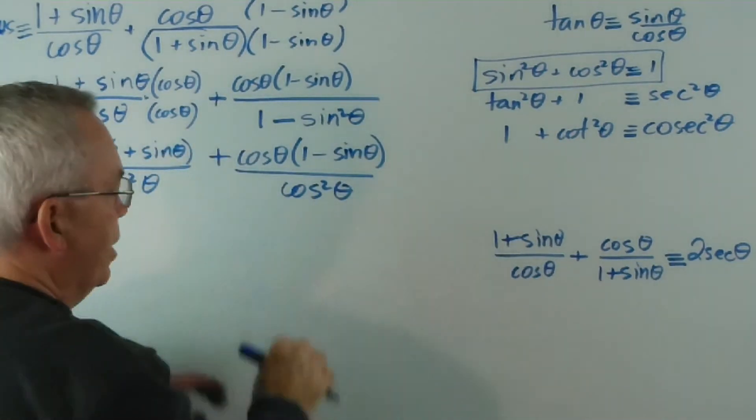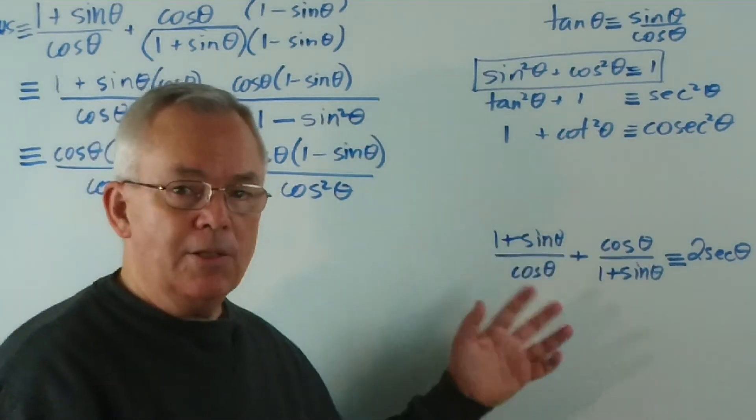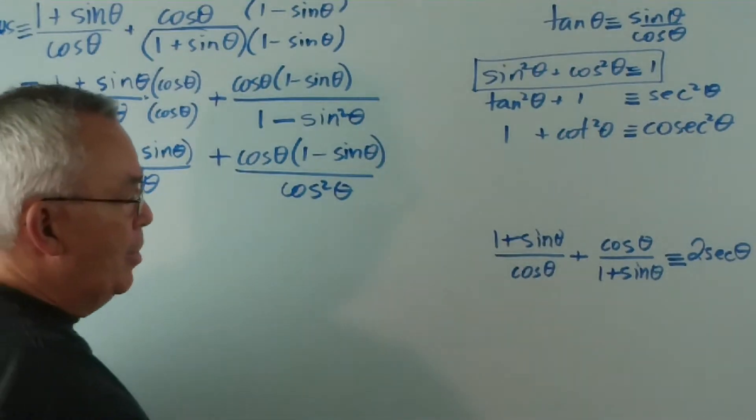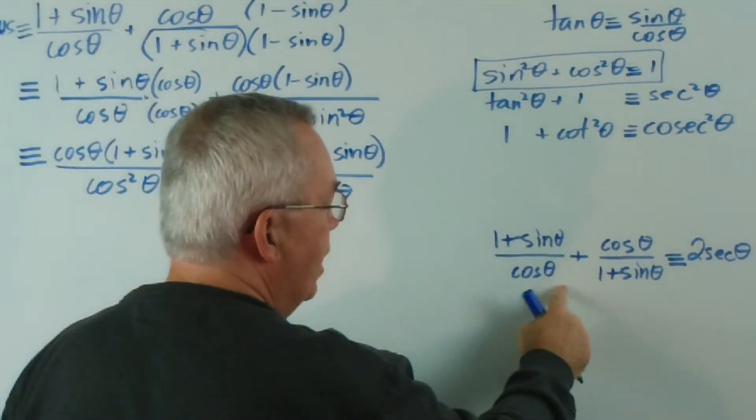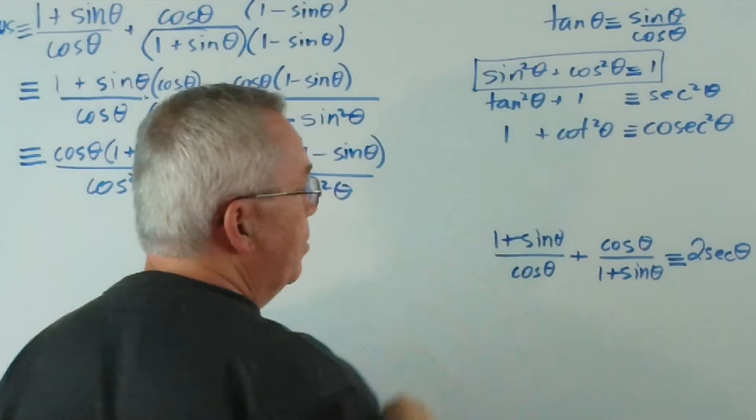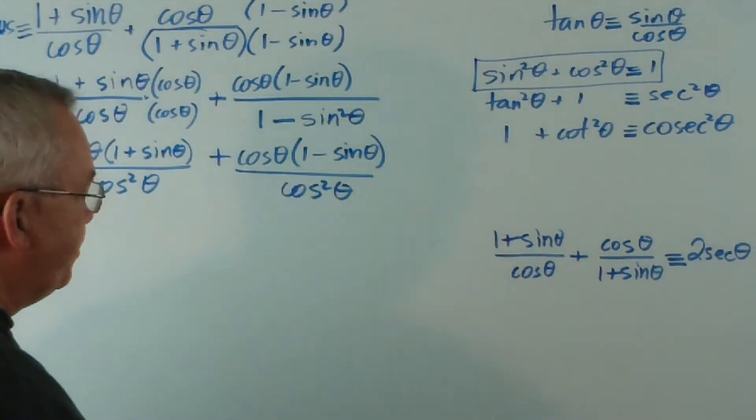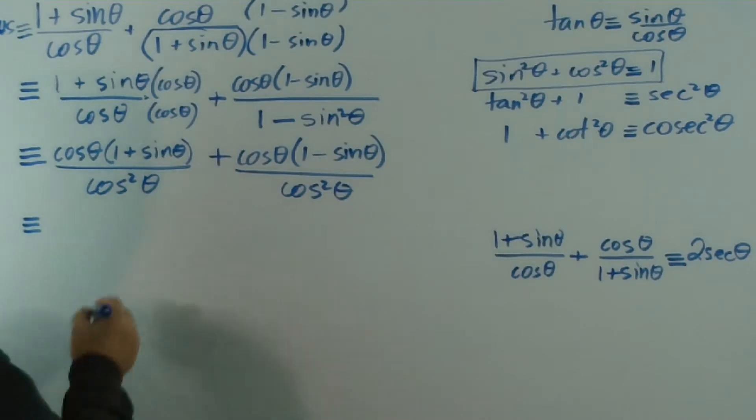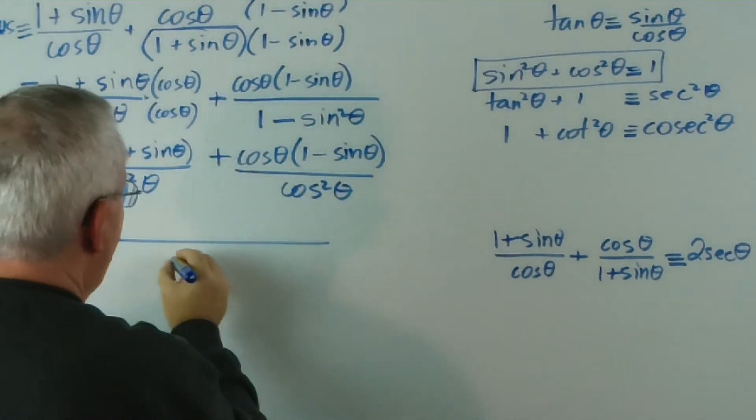And I've now succeeded, because I had two separate fractions, I've now succeeded in getting the same denominator. And it took a little bit of insight to see how these were connected through this particular identity. Now we can just put it all together. So everything over cos squared theta.